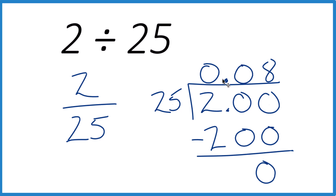If you multiply 0.08 times 25, you will get 2. So that's how you divide 2 by 25 using long division. The answer is 0.08. This is Dr. B — thanks for watching.